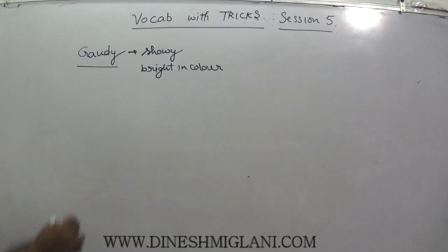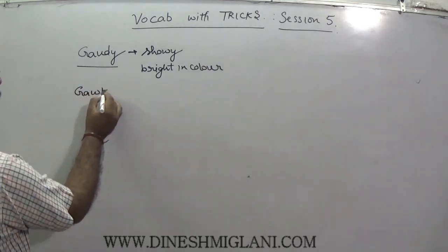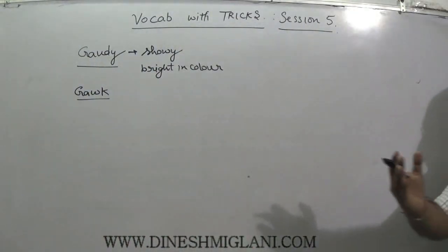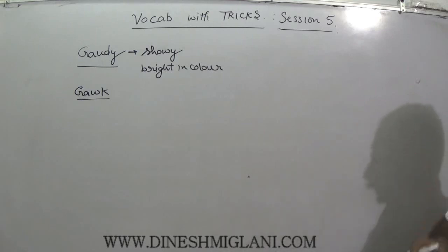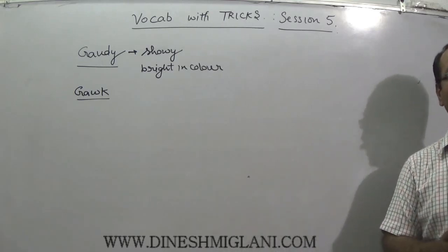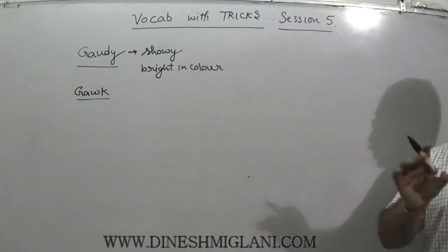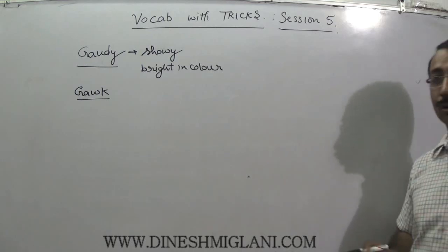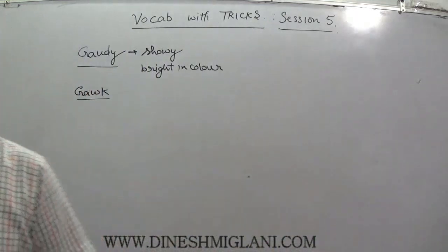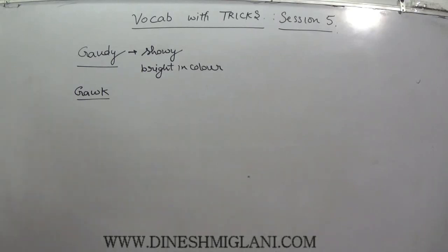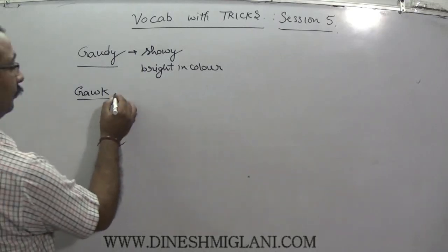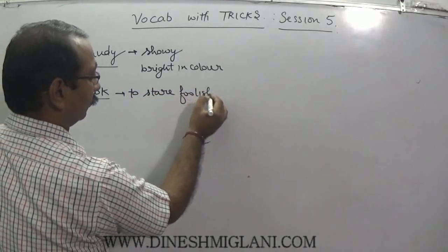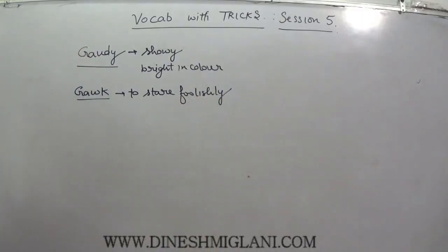Next word is gawk, G-A-W-K. On a stage, a girl is singing and everyone stares at her — that is a bad psychology of the people. Gawk means to stare in a very unpleasant way, or to stare foolishly. Kissi ko murkhataa se ghurna — that is said to be gawk.